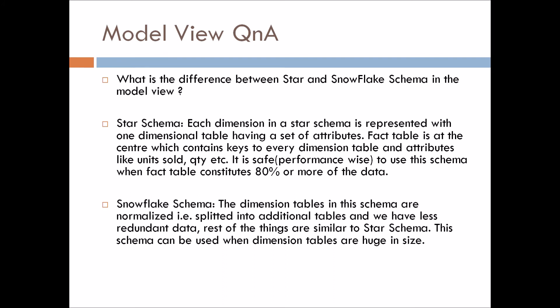Star schema: Each dimension in the star schema is represented with one dimension table having a set of attributes. The fact table is at the center which contains the keys to every dimension table as I explained in the earlier question also, and the attributes like units sold, quantity, etc. The overall structure looks like a star where a fact table is present at the center and the dimension tables surround the fact table in the form of a star.